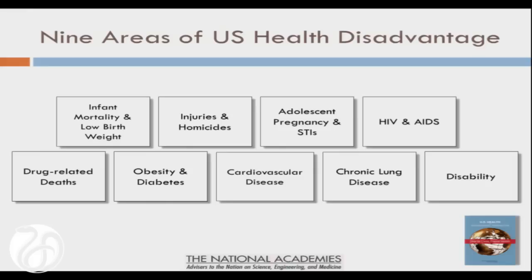Here's the problem our panel encountered when we tried to sum all this up: the various health problems where the US is doing worse than other countries tended to fall into nine buckets. But if you were asked to identify a single cause for all of this, you'd realize these are very diverse conditions. It'd be easy if we could blame it all on obesity or guns or some other single risk factor, but this is a very broad spectrum of conditions. Nonetheless, we tried to take a systematic approach to thinking about what might be causing this.